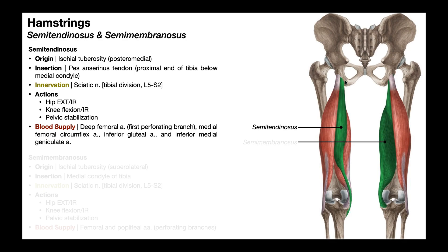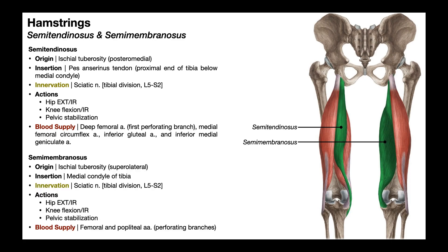Out of the two medial hamstring muscles, the semitendinosus is the more superficial one. If we peel off that muscle, we expose the underlying deeper semimembranosus. The semimembranosus also originates off the ischial tuberosity at the supralateral region, crosses the knee joint, and attaches on the medial condyle of the tibia — but it is not on the pes anserinus tendon. That is only for semitendinosus, gracilis, and sartorius. The semimembranosus is innervated by the sciatic nerve, tibial division, with contributions from nerve roots L5 through S2. It has a smaller blood supply from perforating branches of the femoral artery and the popliteal artery inferiorly. Its actions are similar — hip extension and internal rotation, knee flexion and internal rotation — and it also plays a role in pelvic stabilization.